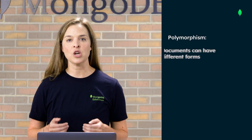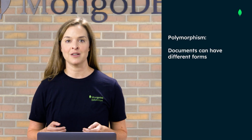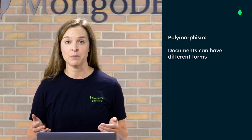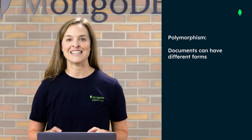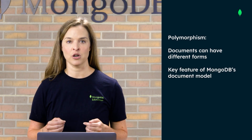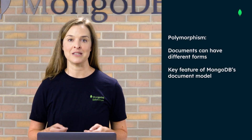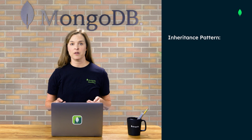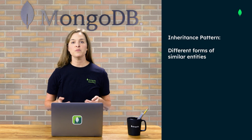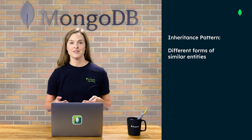The inheritance pattern is based on the notion of polymorphism, where each document in a collection can have a different form or shape. Polymorphism is a key feature of MongoDB's document model. So for the inheritance pattern, different forms of similar entities can exist in the same collection.